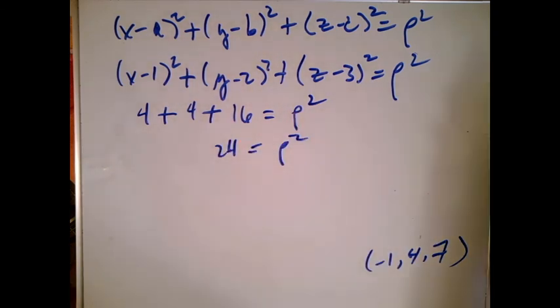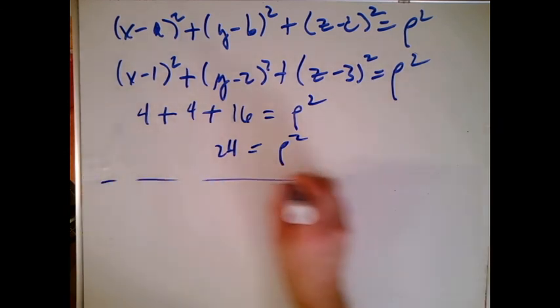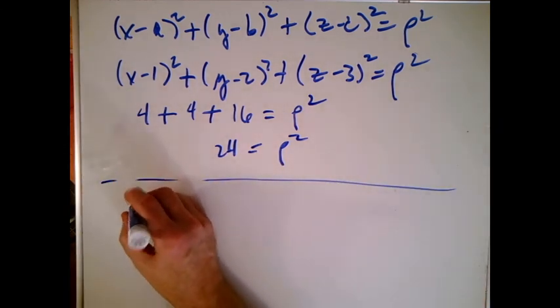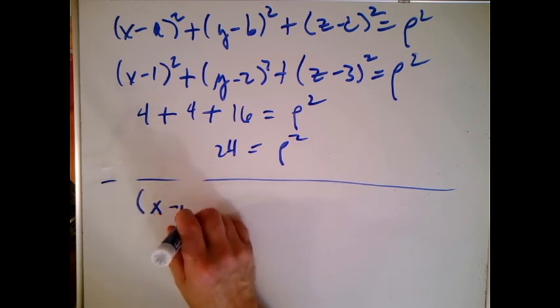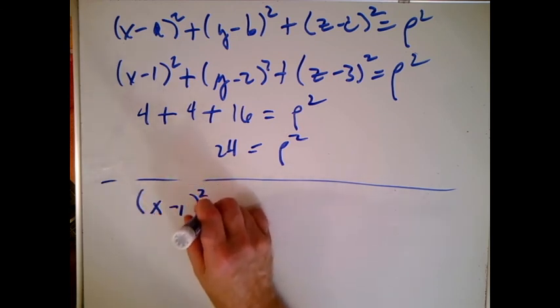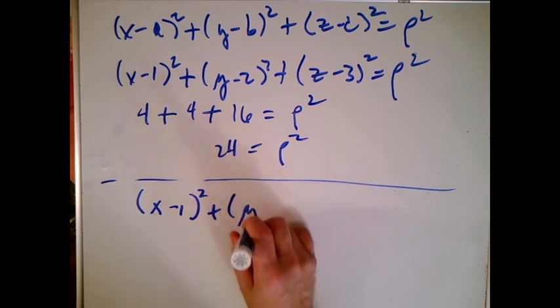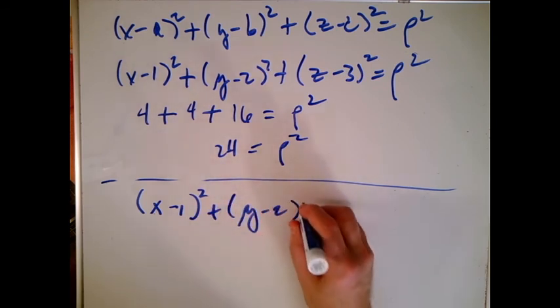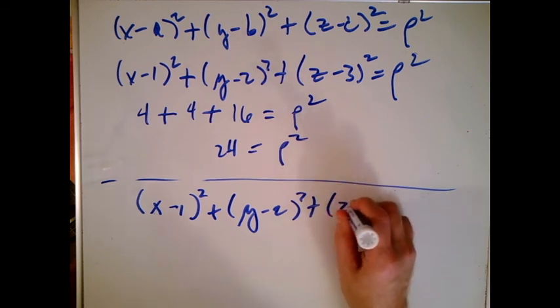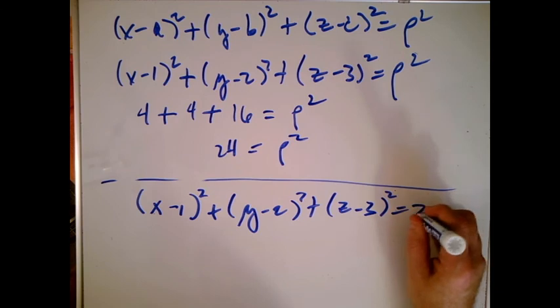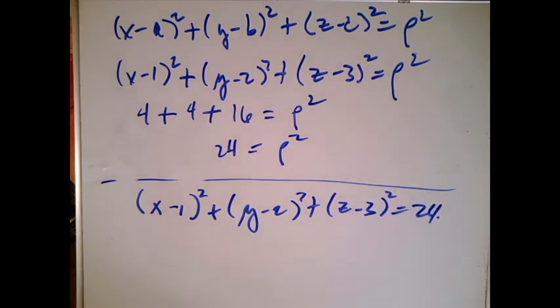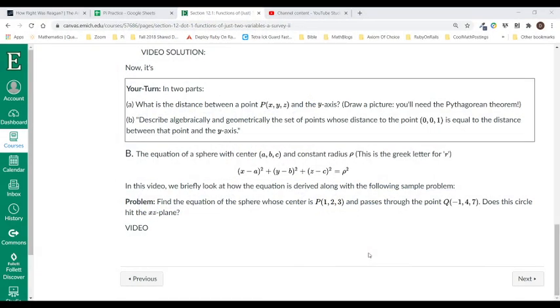And we can at least write down the equation with all the square roots at the moment. So I'm happy about that. I'm just going to write down X minus 1 quantity squared plus Y minus 2 quantity squared plus Z minus 3 quantity squared equals 24. And I just want to go back and review the question. The question was, does it hit the XZ plane?